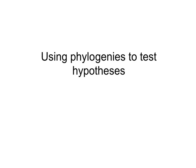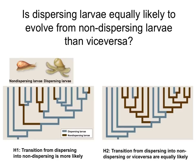In this section, we're going to talk about some of the applications of phylogenies and how we can use phylogenies to test hypotheses in different contexts. One example of such a hypothesis is to test whether dispersing larvae is equally as likely to evolve as non-dispersing larvae.